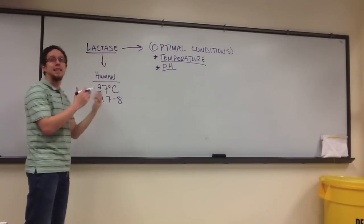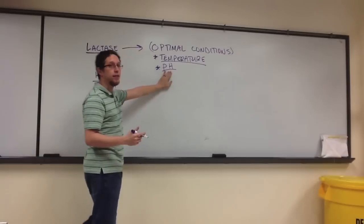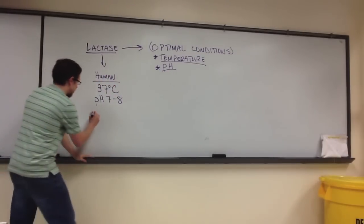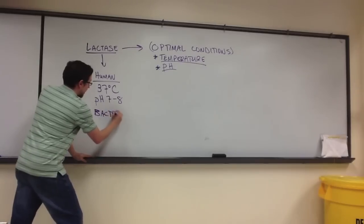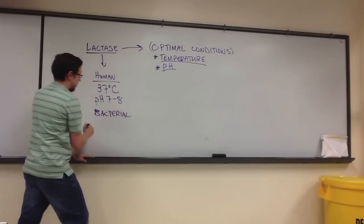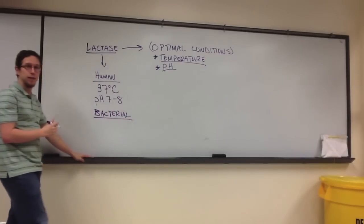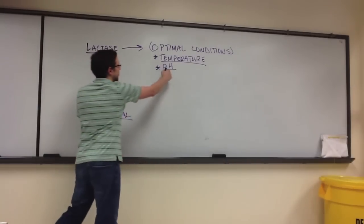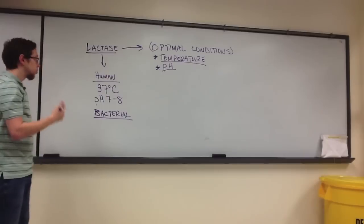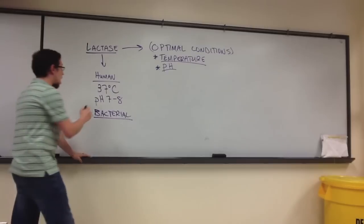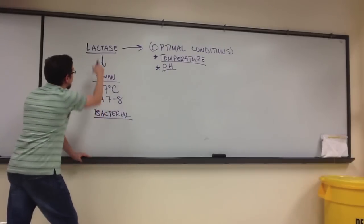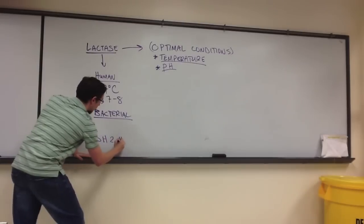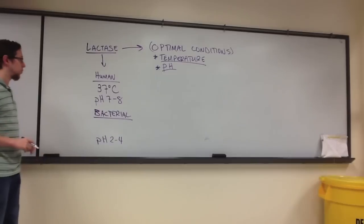So potentially, if we get this enzyme from a certain type of bacteria, we want to find a bacteria that expresses lactase and that is capable of surviving in an acidic environment. So we're probably going to expect the pH that is optimal for this particular lactase from bacteria to be somewhere in the 2 to 4 range, probably something pretty acidic.